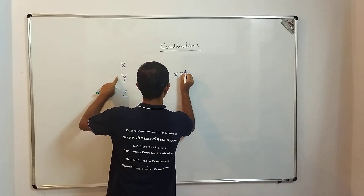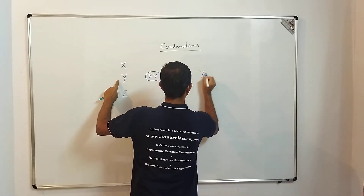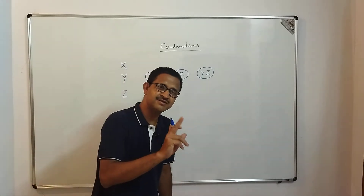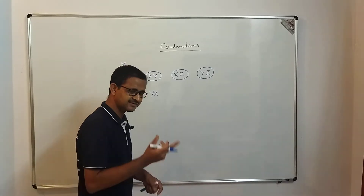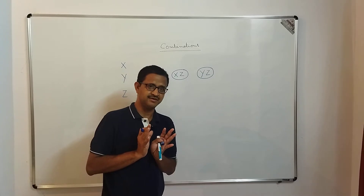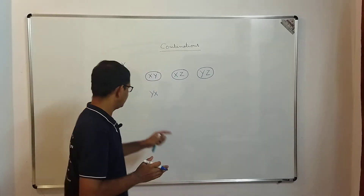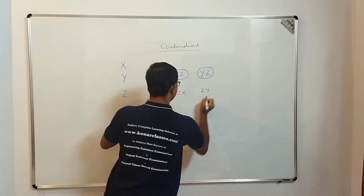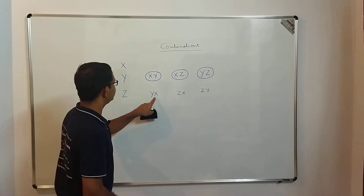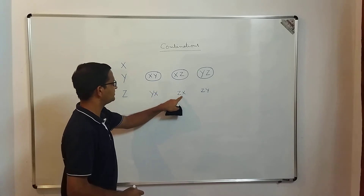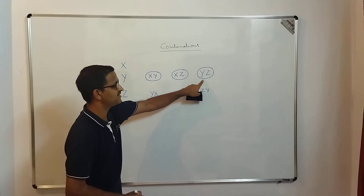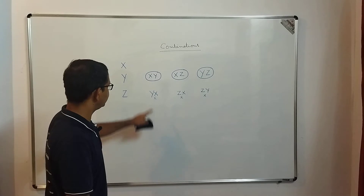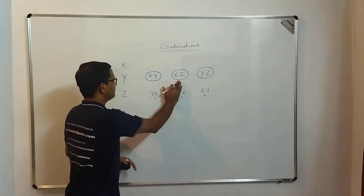The moment we take X-Y, it doesn't make sense to also take Y-X, because this is a selection — player X and player Y form a team, so the order doesn't matter. We need not consider Y-X, similarly Z-X and Z-Y, because Y-X represents the same as X-Y, Z-X the same as X-Z, and Z-Y the same as Y-Z. The possible number of selections is clearly three: X-Y, X-Z, and Y-Z.